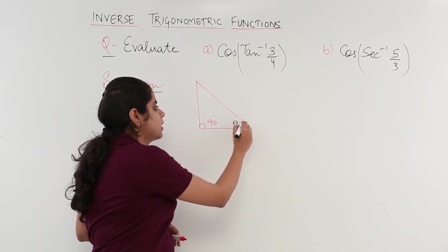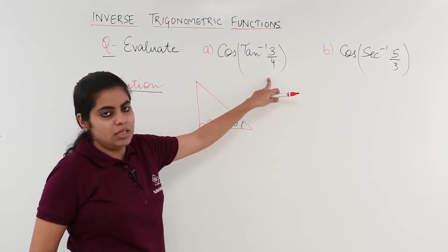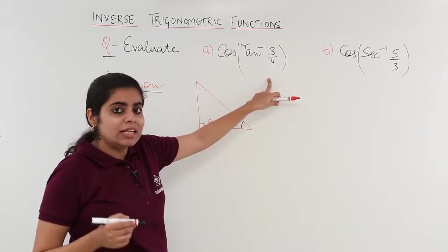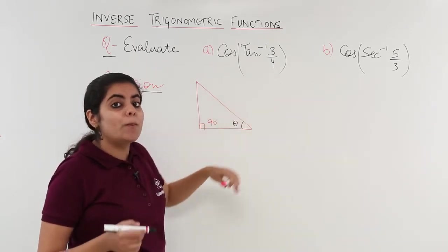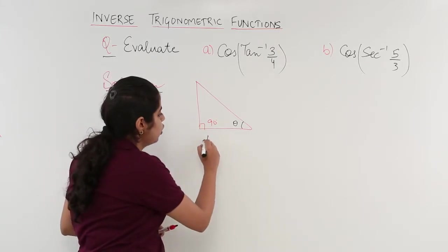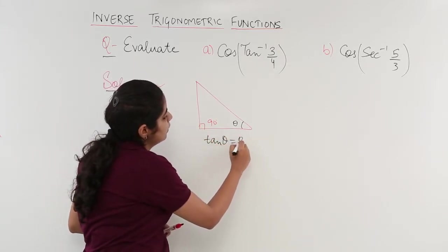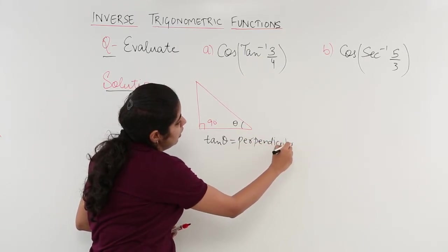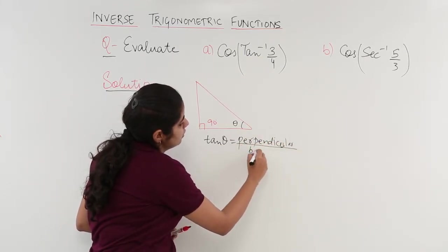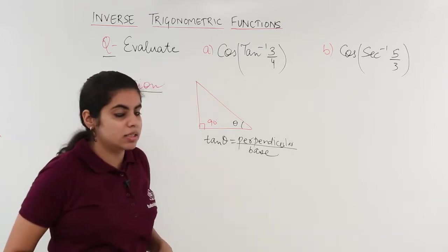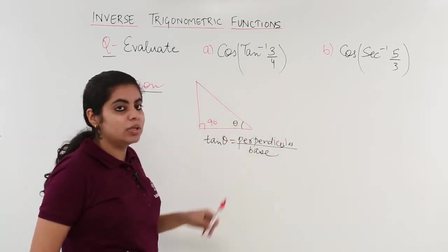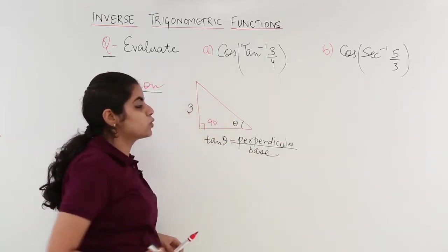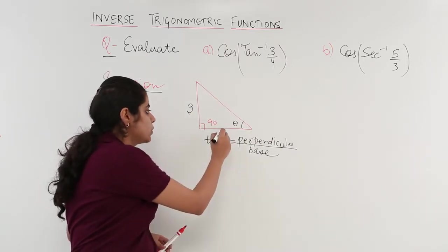Now 3 by 4, let theta is here. So tan means what? Tan θ is equal to perpendicular upon base. That means perpendicular is 3 which is on the opposite side, base is 4 which is here.